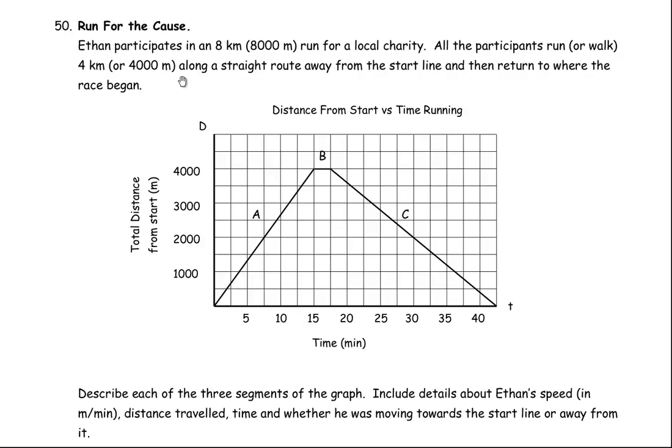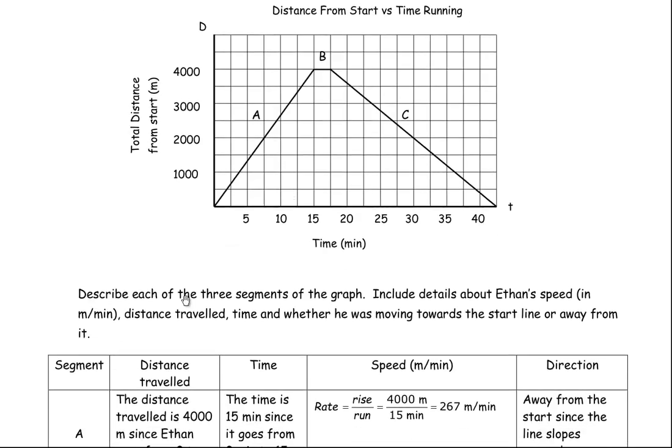Question number 50 for Linear Relations EQAO Practice Questions for Grade 9 Applied, and this one's entitled Run for the Cause. Ethan participates in an 8 kilometer or 8,000 meter run for a local charity. All the participants run, or walk, 4 kilometers or 4,000 meters along a straight route away from the start line, and then they return to where the race began. So 4,000 meters away, 4,000 back to make 8,000 meters altogether, or 8 kilometers. And we have this grid here, and we're going to be asked some questions about it.